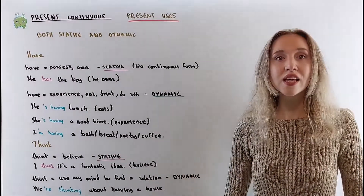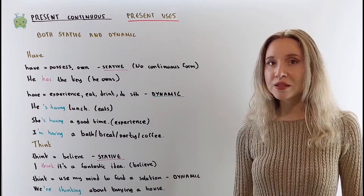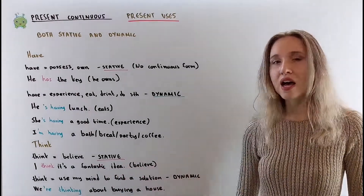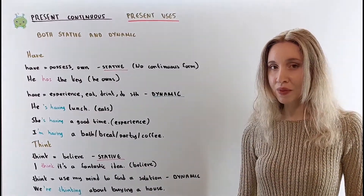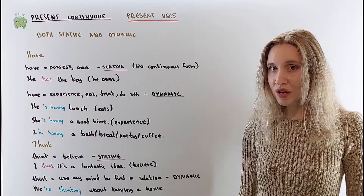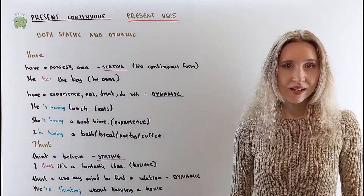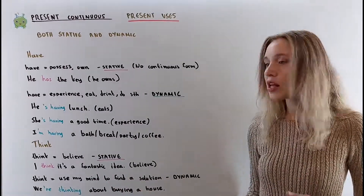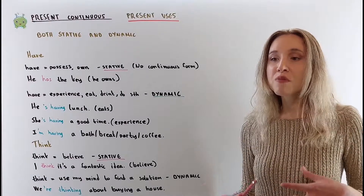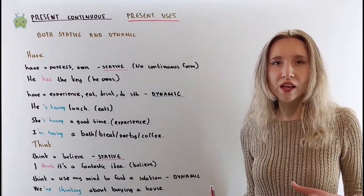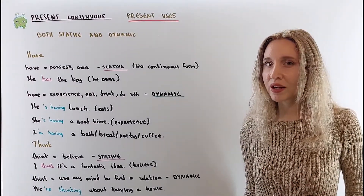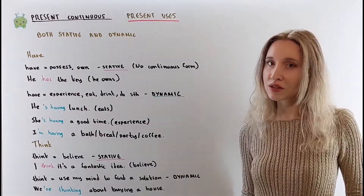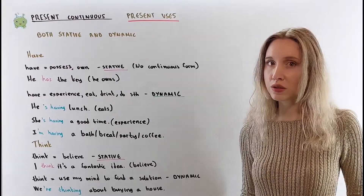The verb 'think' is a stative verb when it means believe: I think it's a fantastic idea — I believe it's a fantastic idea. The verb 'think' can also mean something else: when you use your mind to find a solution, you say I am thinking about doing something. This is a dynamic verb. I am thinking about doing it — I am using my mind to find an answer or a solution to a problem.